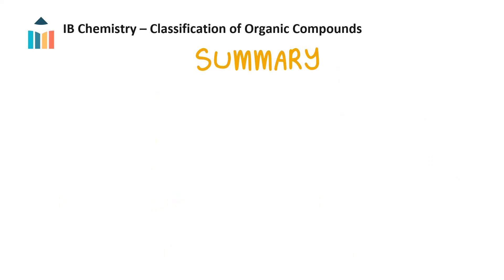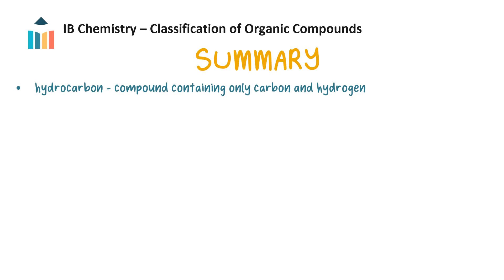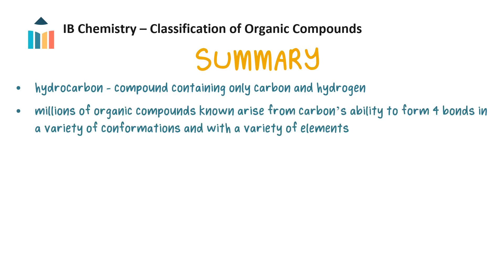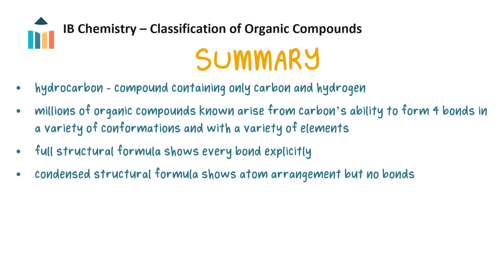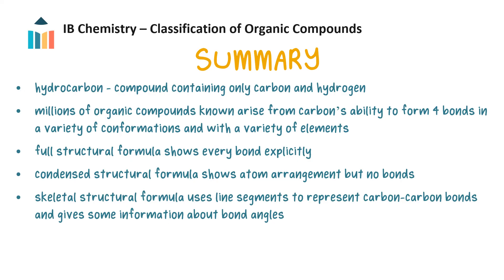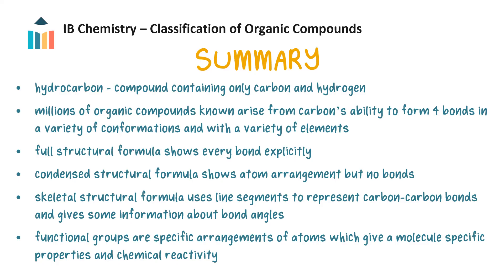Let's summarize what we have learnt. A hydrocarbon is a compound containing only carbon and hydrogen. The millions of organic compounds known arise from carbon's ability to form four bonds in a variety of conformations and with a variety of elements. A full structural formula shows every bond explicitly. A condensed structural formula shows atom arrangement but no bonds. A skeletal structural formula uses line segments to represent carbon-carbon bonds and gives information about bond angles. Finally, functional groups are specific arrangements of atoms which give a molecule specific properties and chemical reactivity.